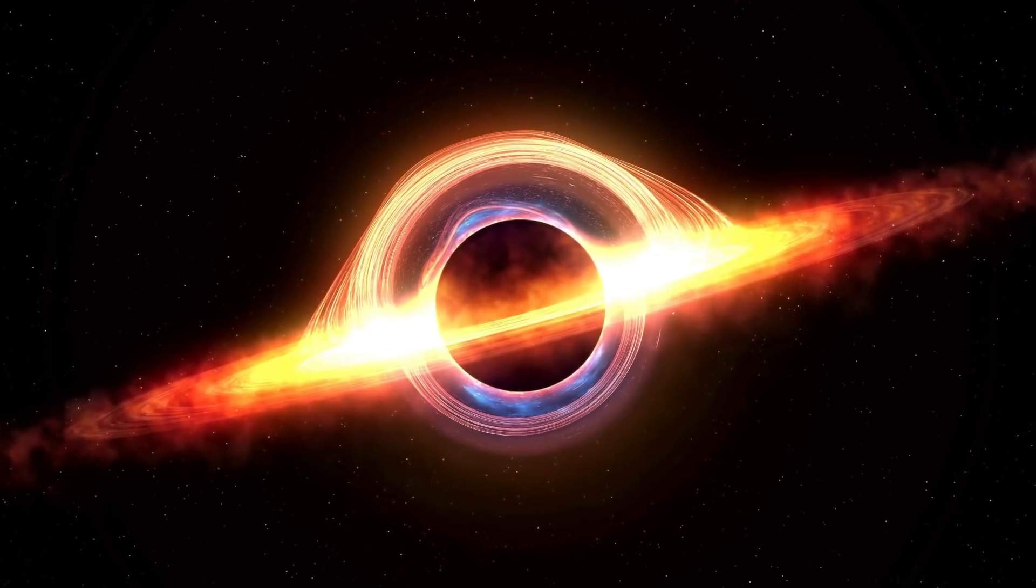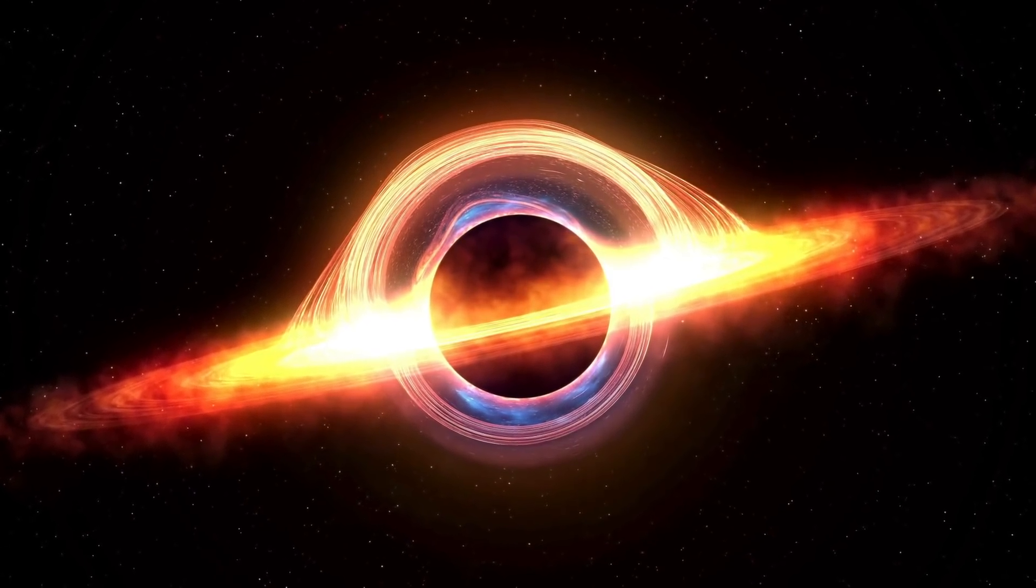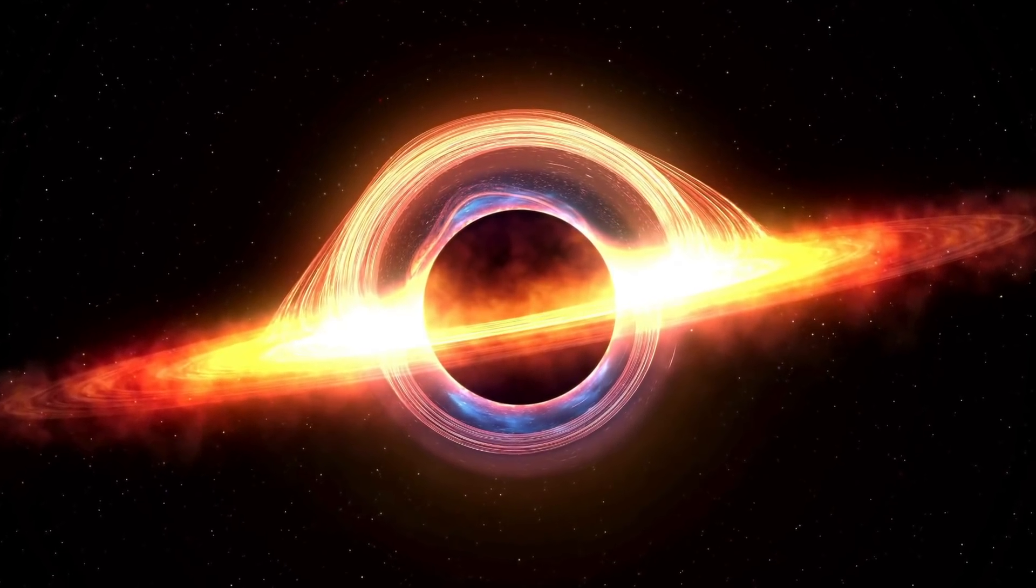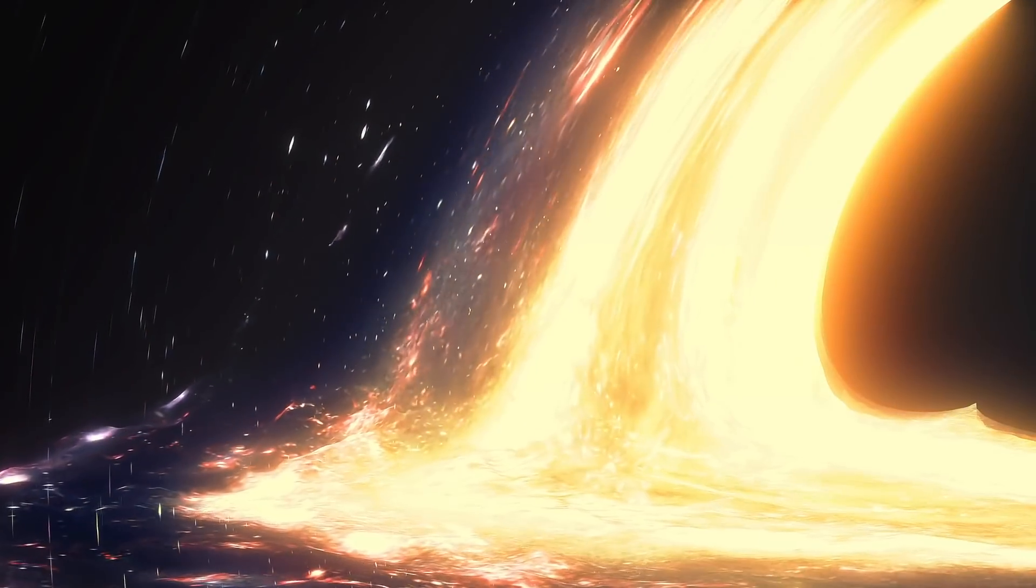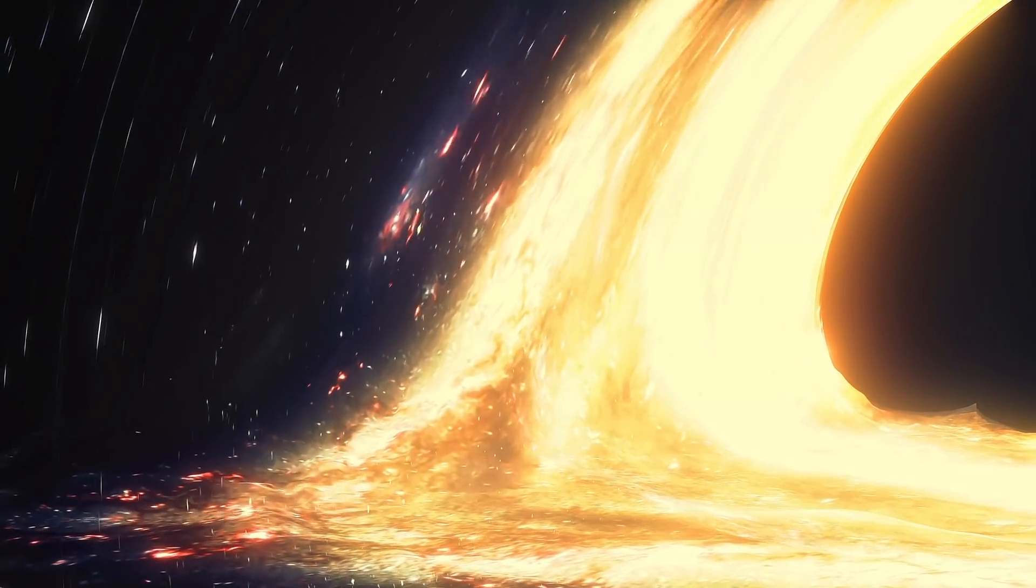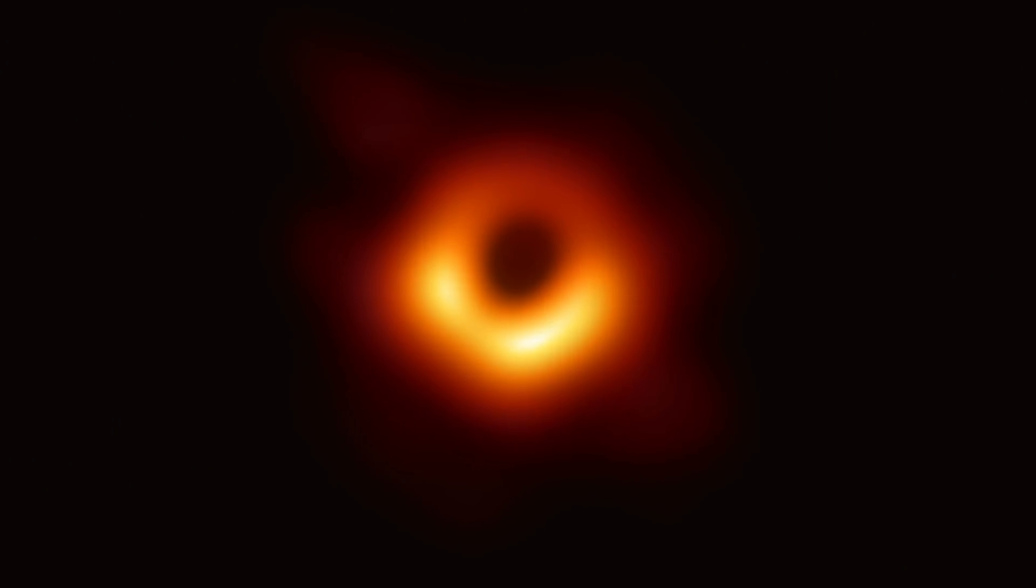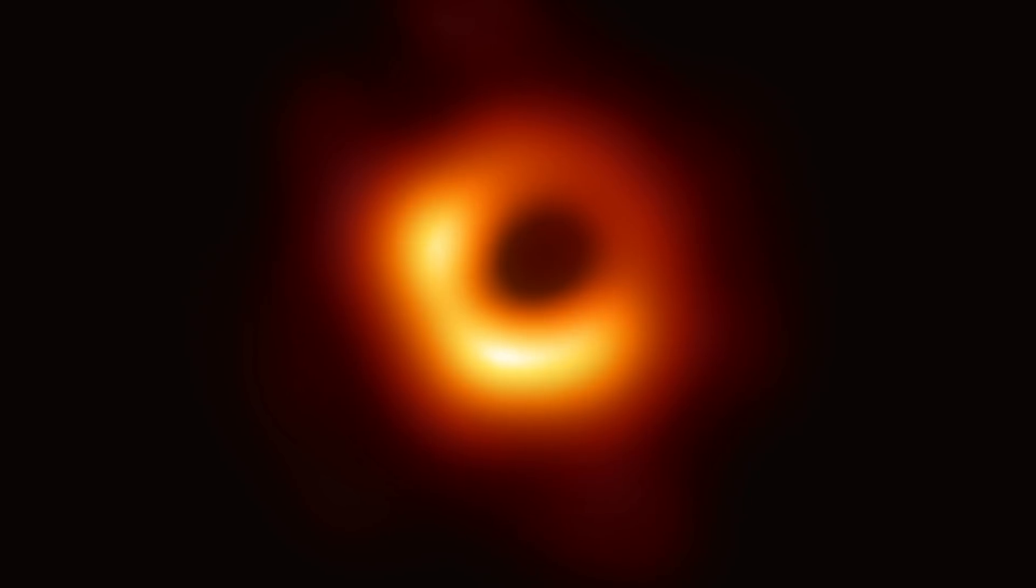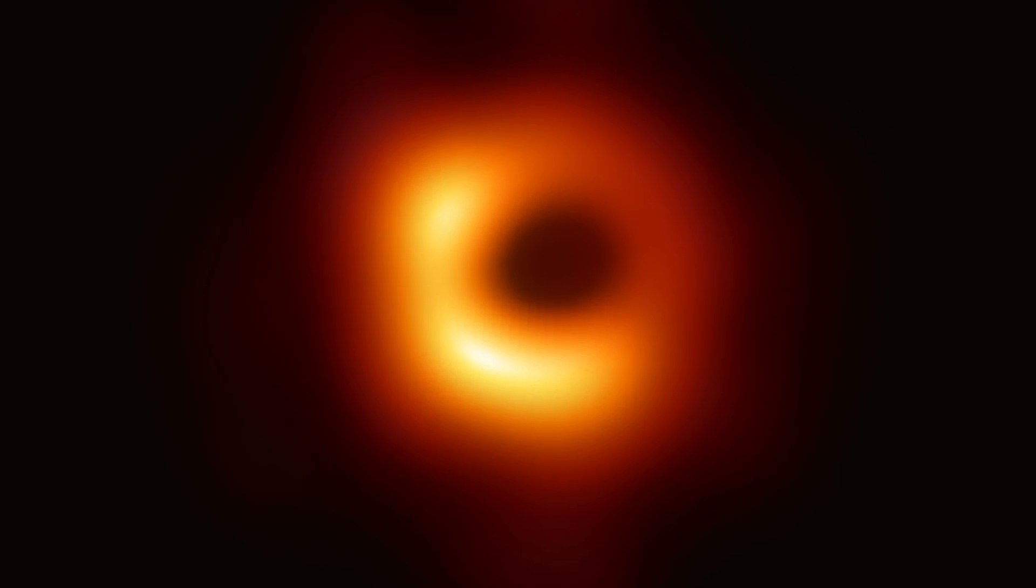Often times people think about black holes as these gargantuan structures that form from collapsed stars. There's a big one in the center of our Milky Way galaxy that weighs 4 million times the Sun. The photograph of a black hole in the galaxy M87 that got the world excited a couple of years back, 55 million light years away, billions of times the mass of the Sun.